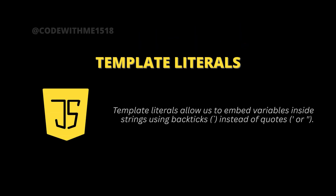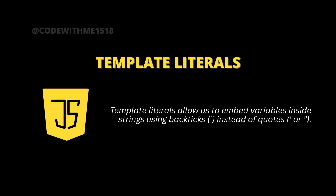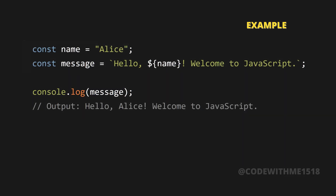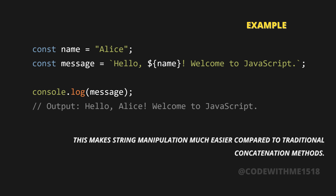Template literals allow us to embed variables inside strings using backticks instead of quotes. For example: const name = 'Alice'; const message = `Hello, ${name}, welcome to JavaScript!`; console.log(message); — Output: Hello Alice, welcome to JavaScript. This makes string manipulation much easier compared to traditional concatenation methods.